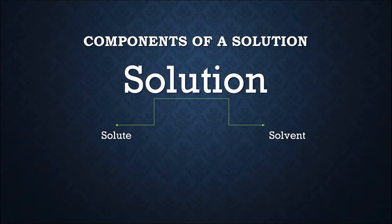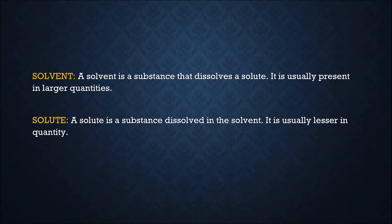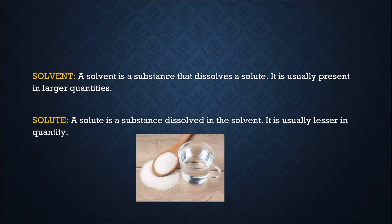The solvent is the substance that dissolves the solute in it. It is usually present in larger quantities. A solute is the substance that is dissolved in the solvent. It is usually present in lesser quantities. Let's take the example of sugar solution. Can you name the solvent and solute in it? The solute is sugar and the solvent is water.